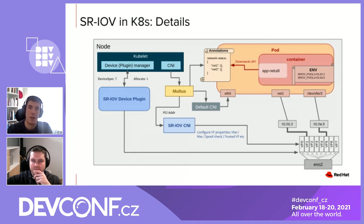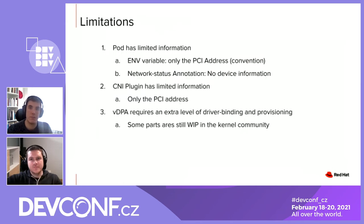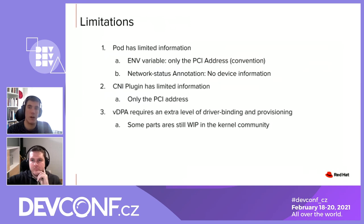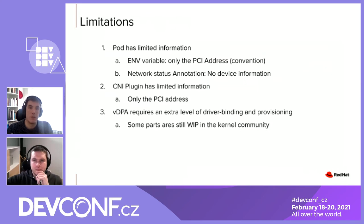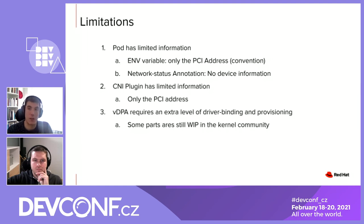In this figure, we show the use of a library called AppNetUtil, which basically parses the content of the network status annotation and offers a native API to workloads. We found that this approach has several limitations. First, the pod has very limited information — it only has the PCI address — and we need more than that for VDPA. We need to know what vhost VDPA device to use, for example. Also, the network status annotation does not have device information, so the pod does not know what VF is associated with which network attachment. The CNI also has very little information. And finally, VDPA provisioning has some extra steps, some of which may change as there are ongoing efforts in the kernel community to develop management tools.